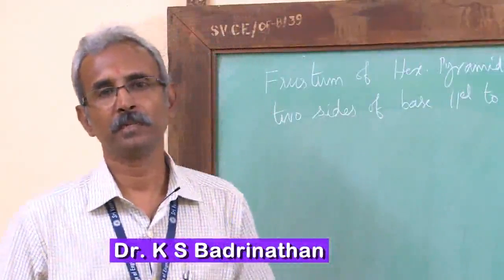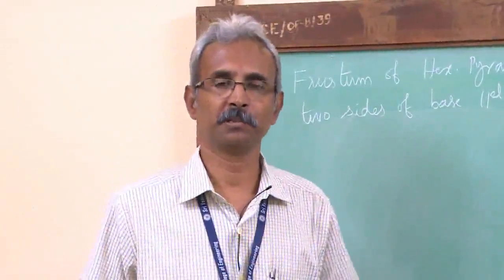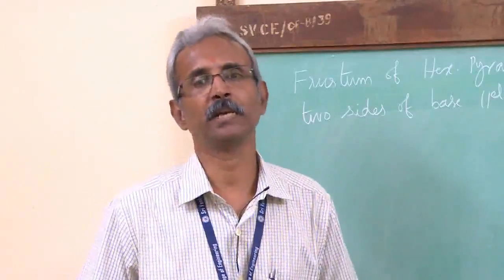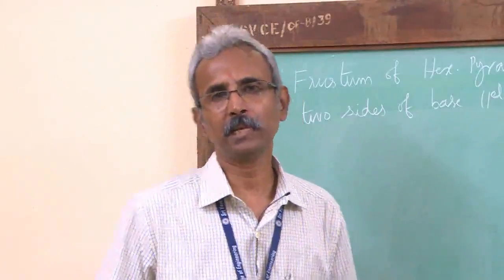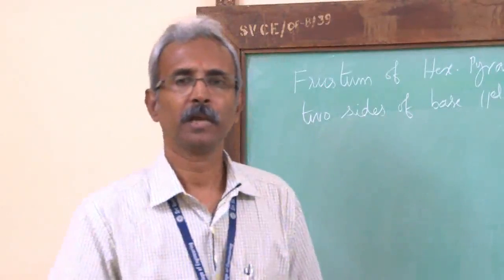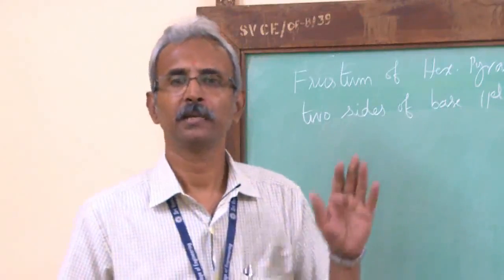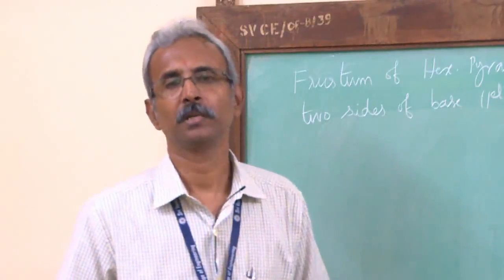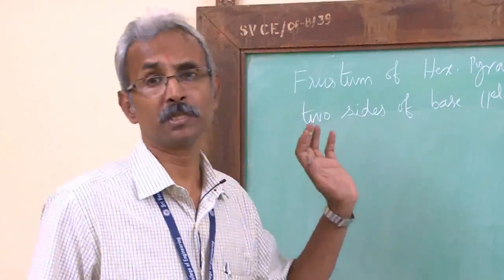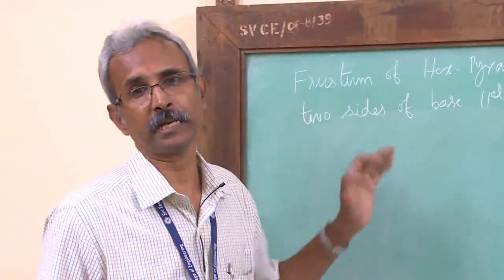In the last session we discussed how to draw isometric views and isometric projections of regular solids like prism, pyramid, cylinder, and cone. But practically we don't always use the full solid — there are situations where we cut one portion and draw the remaining portion. Today we will see how to draw the isometric view of a frustum of a solid and truncated solids.